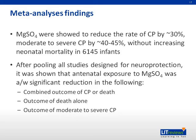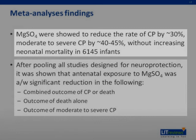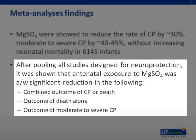However, moderate or severe CP was significantly less likely to occur among children exposed to magnesium sulfate compared with placebo, as well as overall cerebral palsy. After the publication of the BEAM trial, several systematic reviews and meta-analyses were published. This review showed similarly that magnesium reduces the rate of CP by approximately 30% and moderate to severe CP by 40% to 45%, without increasing the rate of death, in 6,145 infants. After pooling all studies designed for neuroprotection, antenatal exposure to magnesium sulfate was associated with reduction in the combined outcome of CP or death, outcome of death alone, and outcome of moderate to severe CP.